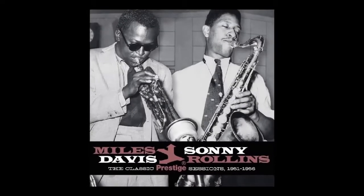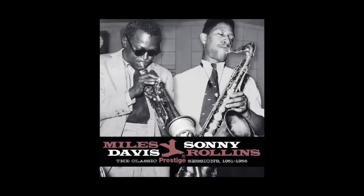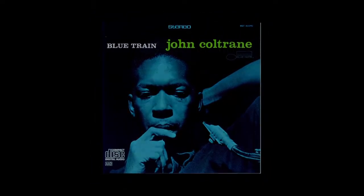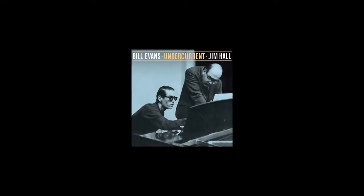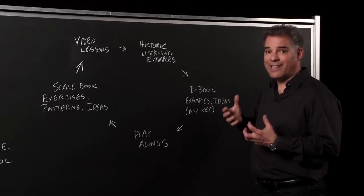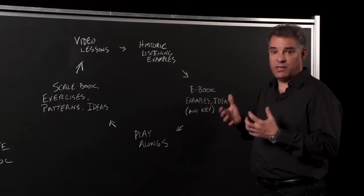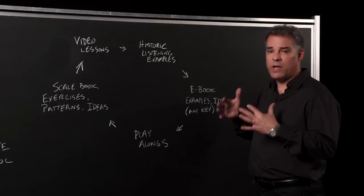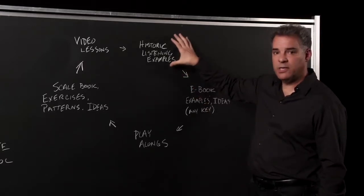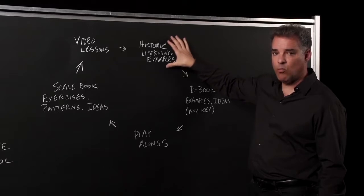They would be able to listen to historic listening examples and hear how great artists like Miles Davis, John Coltrane, Sonny Rollins, the greatest of all time, use scales when they improvise. They can also start to get a feeling for phrasing and articulation. The only way to really get that is by listening to greats, and we have these listening examples integrated right in the course.